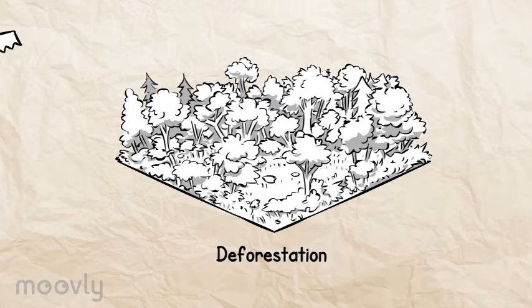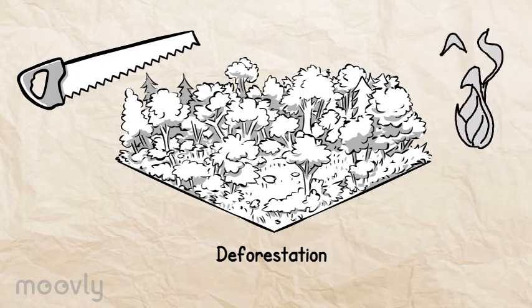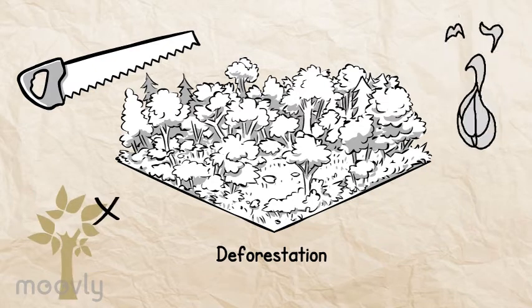Deforestation happens when people cut and or burn forests. This is very common and takes away the homes of other living organisms.